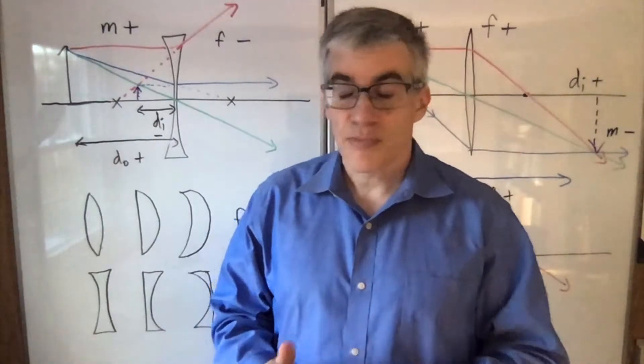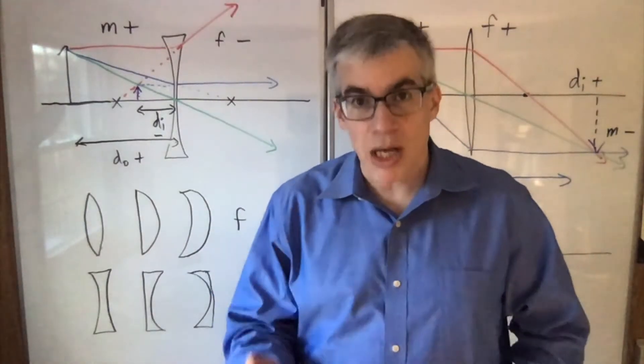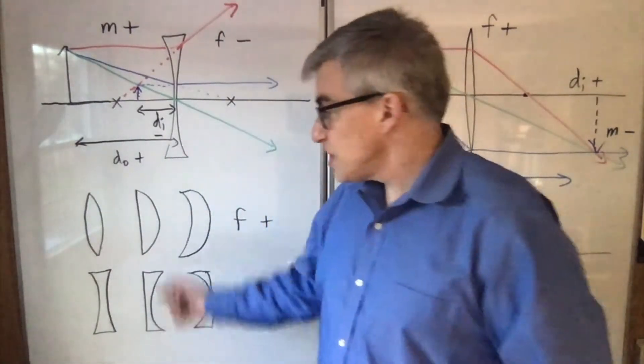Sign conventions for lenses. First of all, a lens has a positive focal length if it's thicker in the middle.